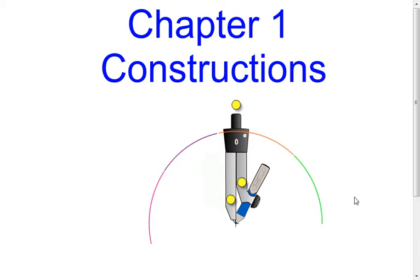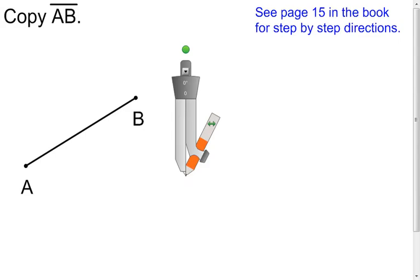In this lesson we're going to talk about constructions and all the different constructions that we had in this first chapter. The first one we're going to look at is copying a segment, or constructing a segment that's congruent to another segment.